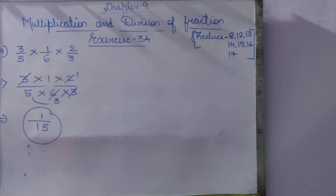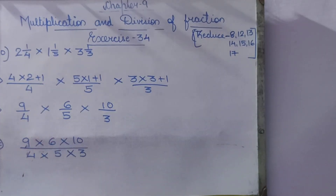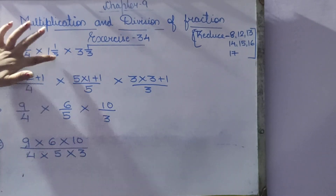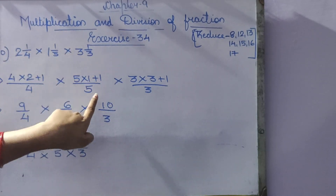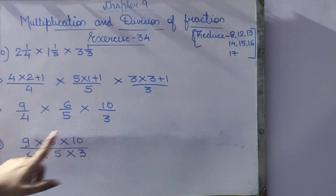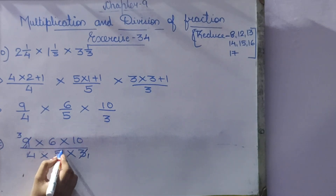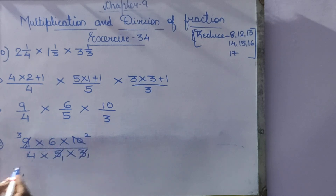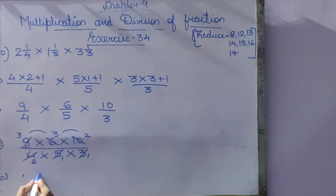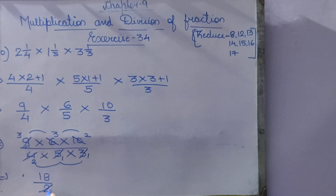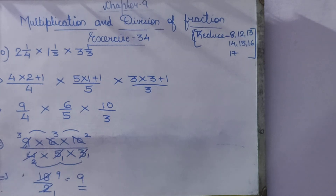Question 20: 2¼ × 1⅕ × 3⅓. Convert all: 4 × 2 + 1 = 9, giving 9/4; 5 × 1 + 1 = 6, giving 6/5; 3 × 3 + 1 = 10, giving 10/3. So 9 × 6 × 10 divided by 4 × 5 × 3. Simplify: 3 and 9 (÷3), 5 and 10 (÷5), 2 and 4 (÷2), 3 and 6 (÷3), giving 3 × 3 × 2 divided by 2 × 1 = 18/2 = 9. Answer is 9. Exercise 34 is finished.